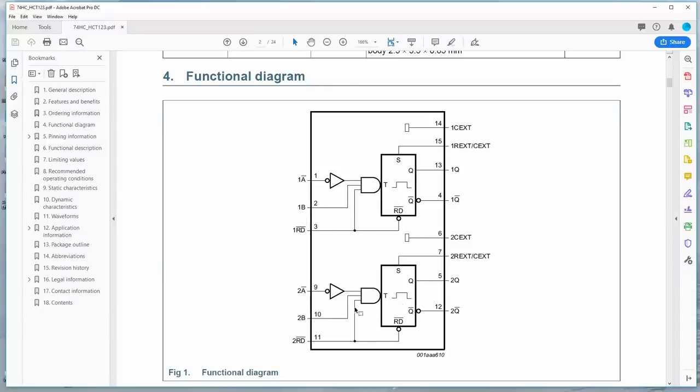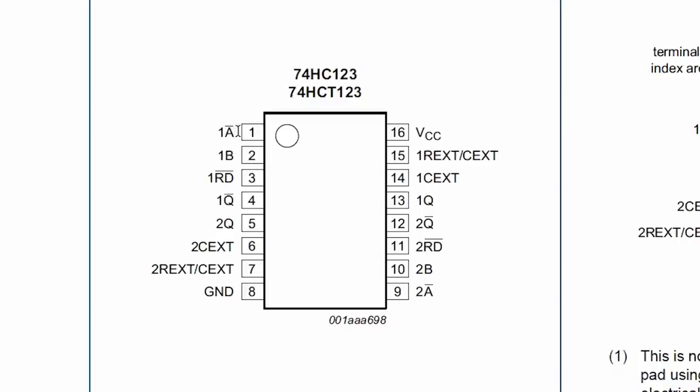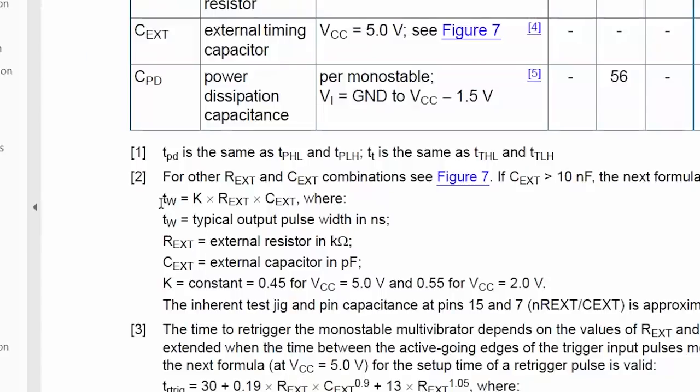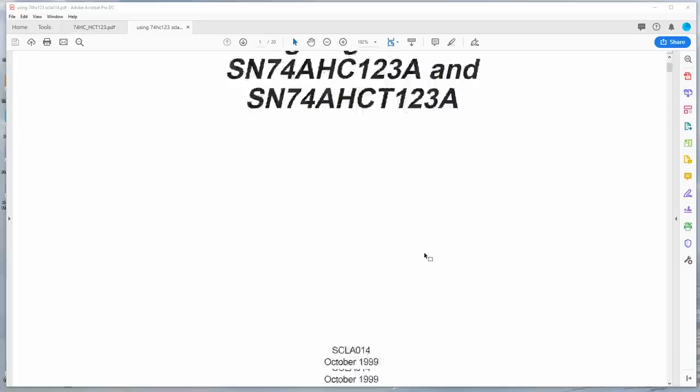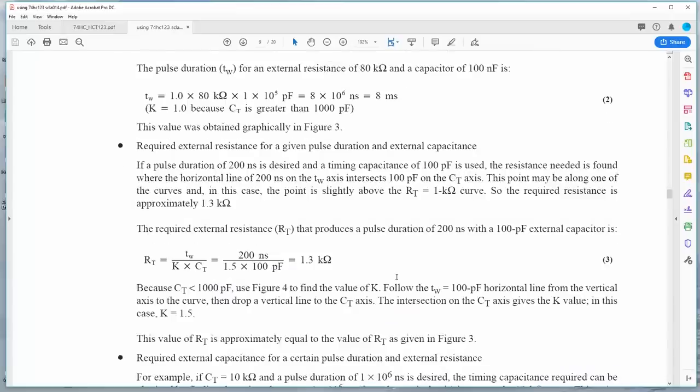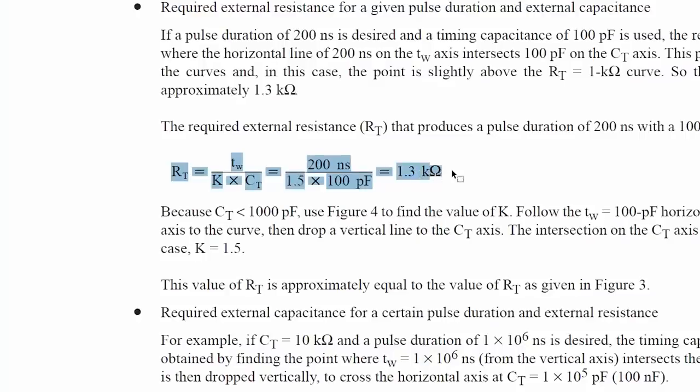74HC123 dual re-triggerable monostable multivibrator with reset. So this device has two timers in it, and we need two different pulse lengths for our NeoPixels. Alright, so we have falling edge input, rising edge input - that's the one we'll use. We have two pins that set the pulse time using a capacitor and a resistor. Then we have an inverted output and a non-inverted output, and then down here basically everything is just duplicated. Okay, here we go. Time in nanoseconds equals k constant times resistor times capacitor. Hey, here's another data sheet. This one's from TI. The part's actually Nexperia, but whatever. Ah, here we go. This is the formula that will work for us.